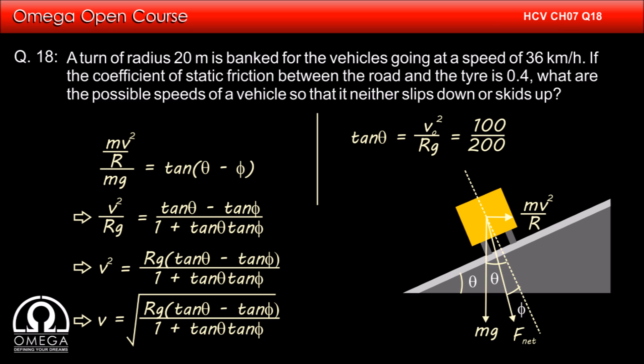Putting the values of V0, R and G, we get tan theta is equal to 100 by 200 or 0.5. Putting tan theta as 0.5 and tan phi as mu that is 0.4 and simplifying we get V is equal to 4.08 m per second or 14.7 km per hour. This is the minimum speed vehicle can travel without slipping down.